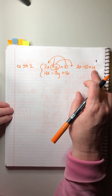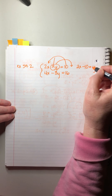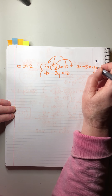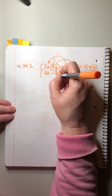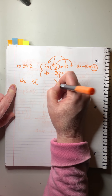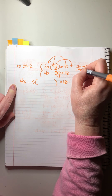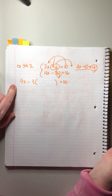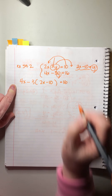Now y is on the right rather than the left — that's fine, as long as it's by itself we can substitute. So we write equation B: 4x minus 3 times (2x minus 10) equals 16. That's the expression for y going right in there.